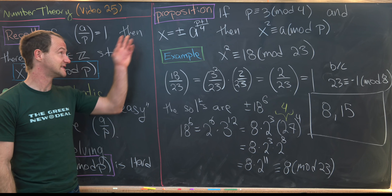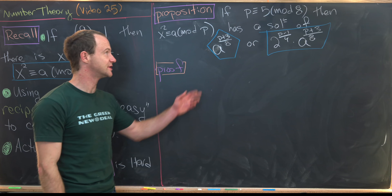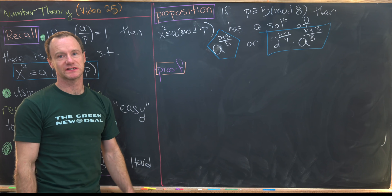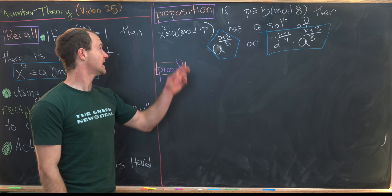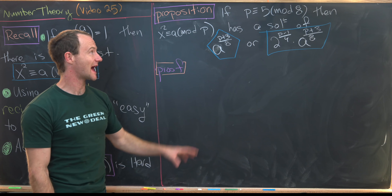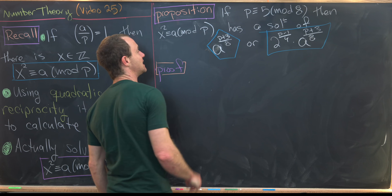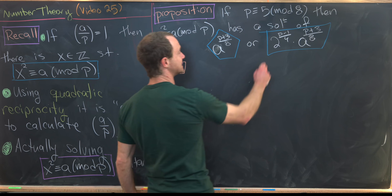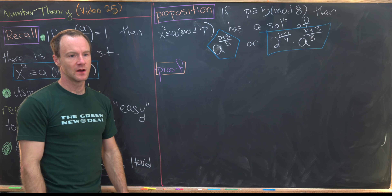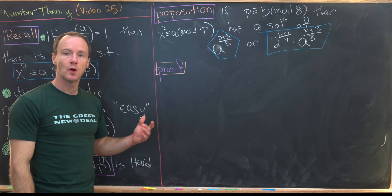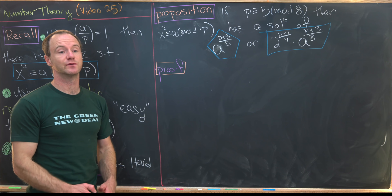Now let's look at a similar proposition for other types of primes. Our next proposition has to do with primes of the form 8k+5 — in other words, congruent to 5 mod 8. Then x² ≡ a mod p has one of these as a solution: either a^((p+3)/8) or 2^((p−1)/4) · a^((p+3)/8).